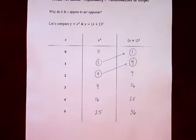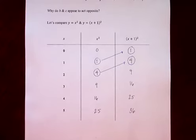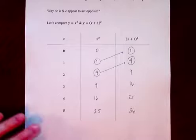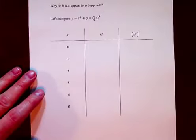So the plus 1 is not your transformation. Your transformation is what x must be to compensate for the plus 1, and it must be one unit more negative. That's why it moves us to the left. That's a C value. The same thing applies with a B value.